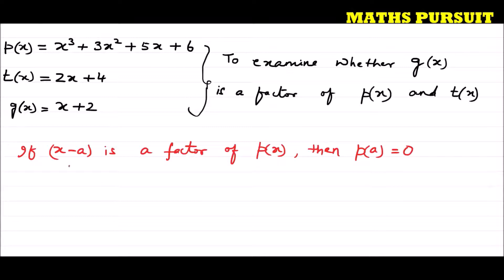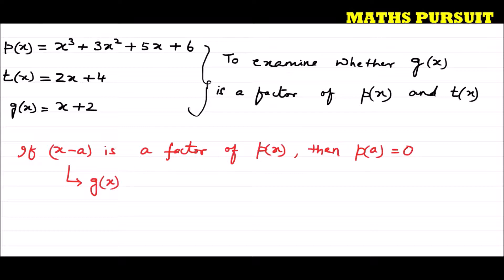In our case, x minus a is nothing but g(x). So we need to find out whether g(x) is a factor of p(x) and t(x) or not. The factor theorem states that if x minus a is a factor of p(x) then p(a) equals 0, and similarly if x minus a is a factor of t(x) then t(a) equals 0. We will use this factor theorem to examine whether x + 2 is a factor or not.